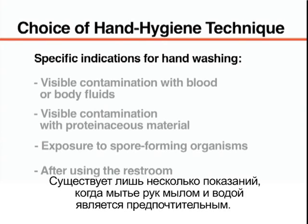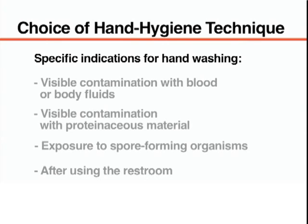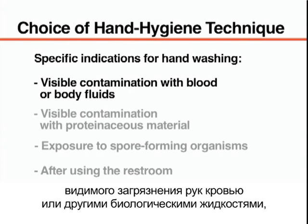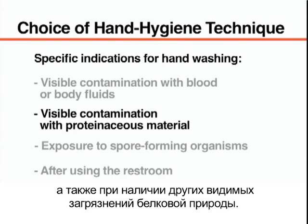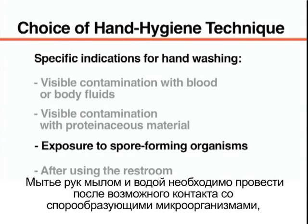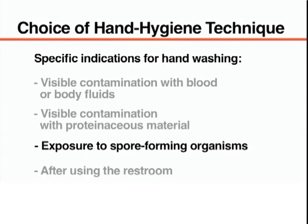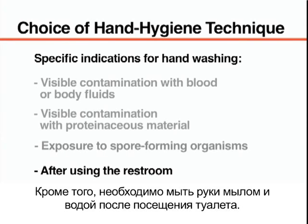There are a few specific indications for which hand washing should be performed instead of hand rubbing. Hand washing must be conducted when the hands are visibly contaminated with blood, body fluids, or proteinaceous material. Hand washing must also be performed after exposure to spore-forming organisms — for example, after caring for patients with diarrhea associated with Clostridium difficile or after exposure to Bacillus anthracis. Finally, hand washing should be performed after using the restroom.